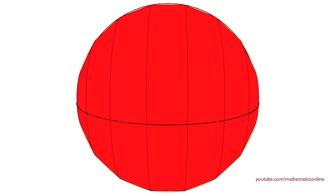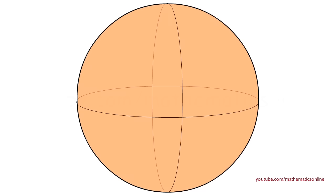Specifically, notice how the surface area of the model approximates the surface area of the sphere. So if we increase the sides of the inscribed polygon to infinitely many sides, then the surface area of the model becomes equal to the surface area of the sphere.